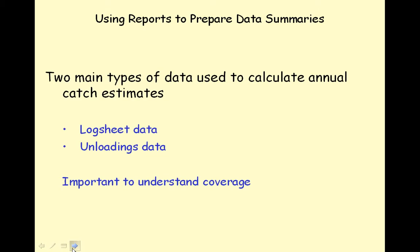The two main types of data used to calculate annual catch estimates are log sheet data and unloadings data. The other important variable used to determine annual catch estimates is an understanding of what coverage your catch data represents. For further information, refer to the lesson Determining Data Coverage in the section on Using Reports for Data Quality Control in this video training tool.